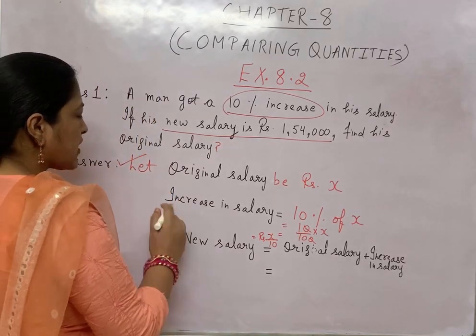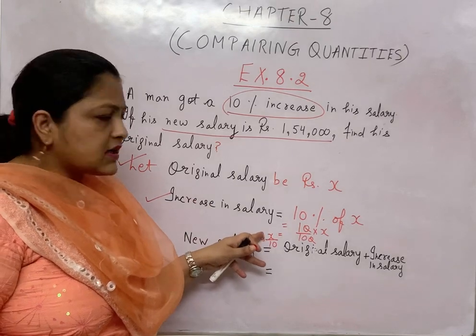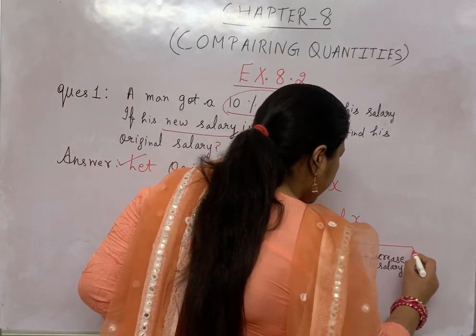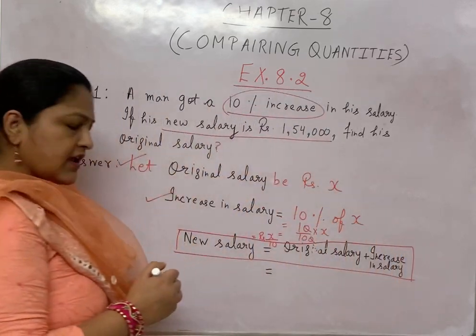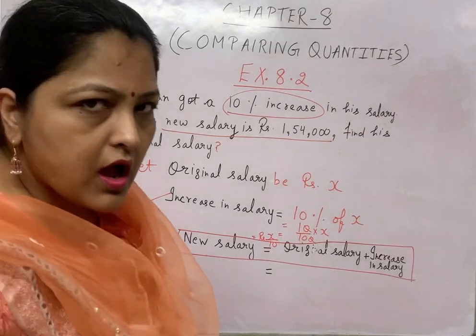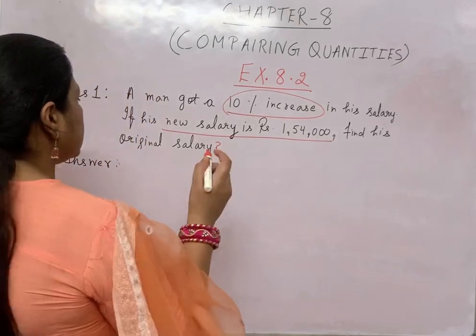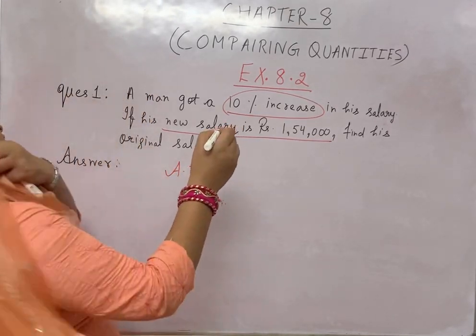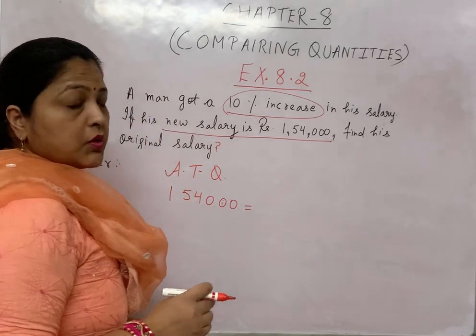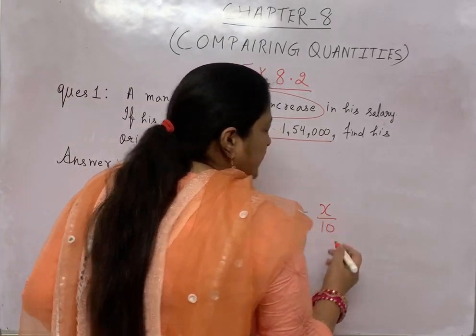Now I know the original salary and the increase in salary. In case of increase, we add the increase to the original salary. The formula is: New salary = Original salary + Increase in salary. Applying this to the question: 1,54,000 = X + X/10.